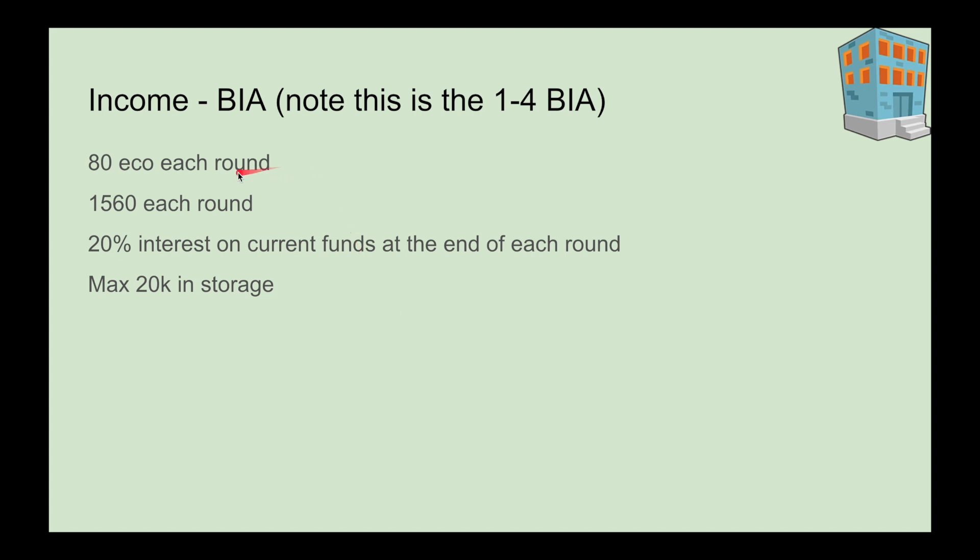We're going to start by talking about the income of both, then compare the profit. The income of the BIA: it gives you 80 eco each round, $1560 each round, and 20% interest on current funds in the bank at the end of each round. Basically, however much money you have, you're going to get 20% of that extra at the end of each round.